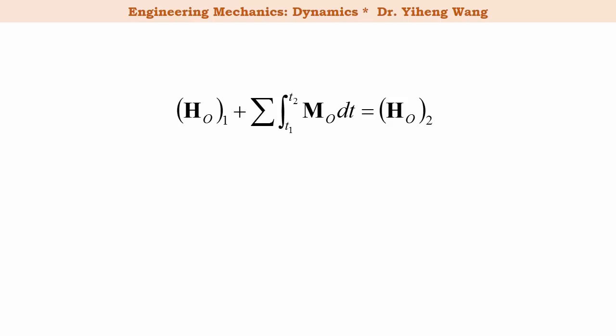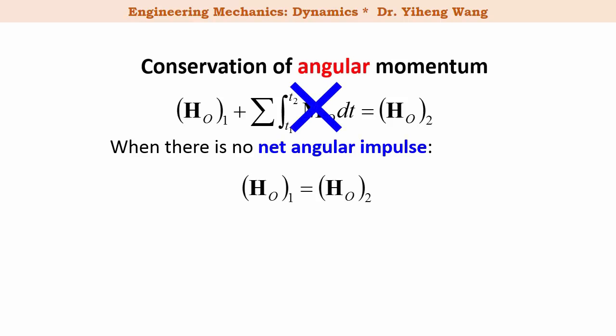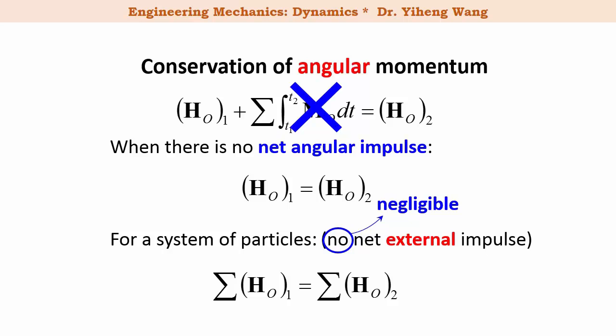From the principle of angular impulse and momentum, if there is no net angular impulse, the integration term is eliminated and we get the conservation of angular momentum, meaning the initial angular momentum of the particle equals its final angular momentum calculated about the same reference point O. This can also be applied to a system of particles if there is no or negligible net external angular impulse. Make sure angular momentum is calculated about the same reference point before and after the process.